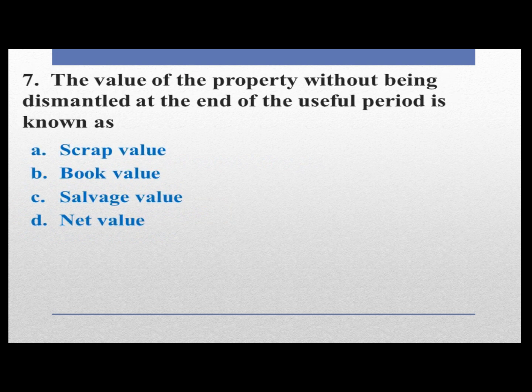The value of the property without being dismantled at the end of the useful period is known as: option A scrap value, option B book value, option C salvage value, option D net value. The answer is salvage value. Option C is correct.